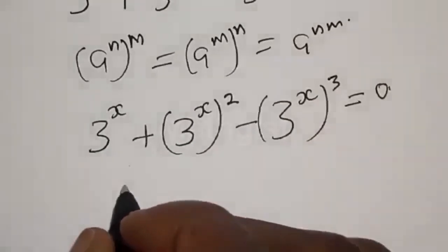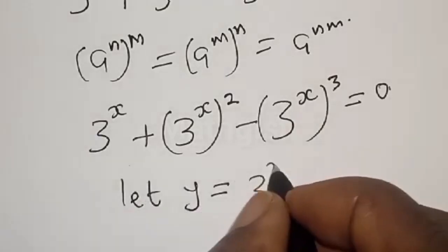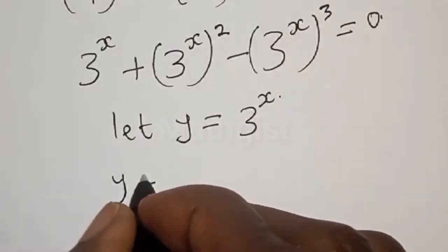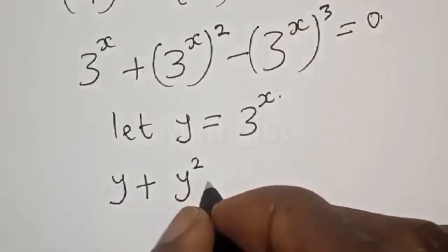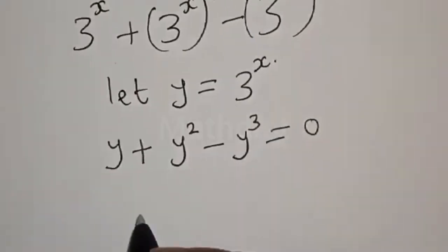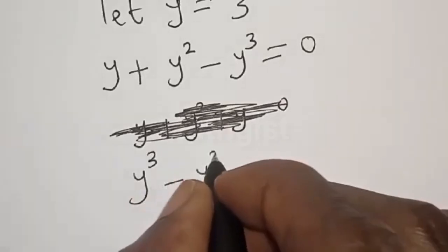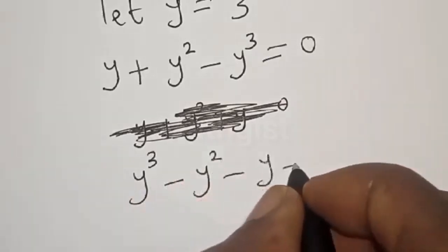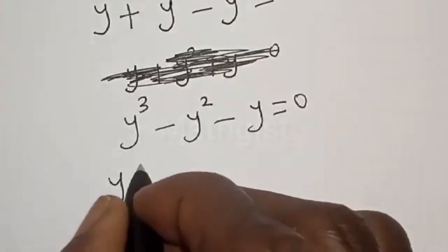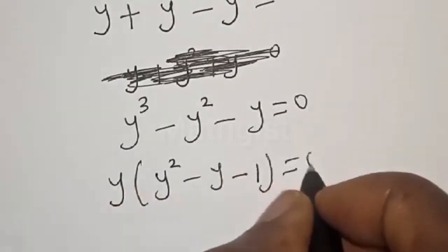From here, let y equal 3 raised to power s. Then we have y plus y squared minus y cubed is equal to 0. Let's rearrange and factor y out.